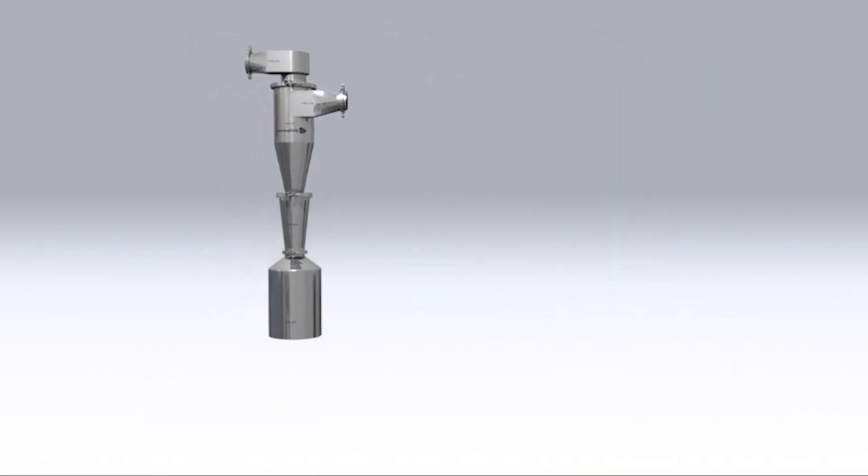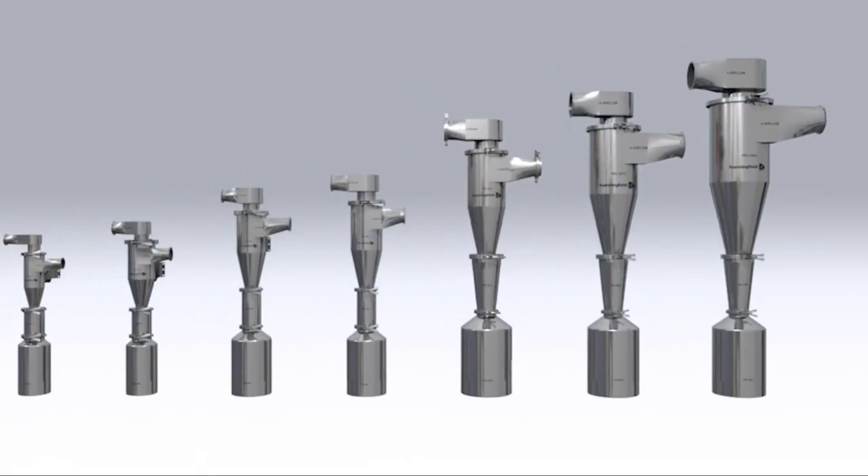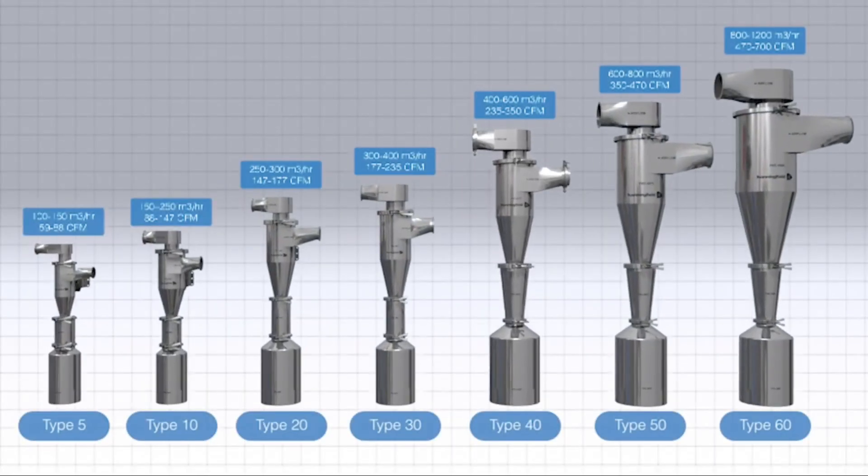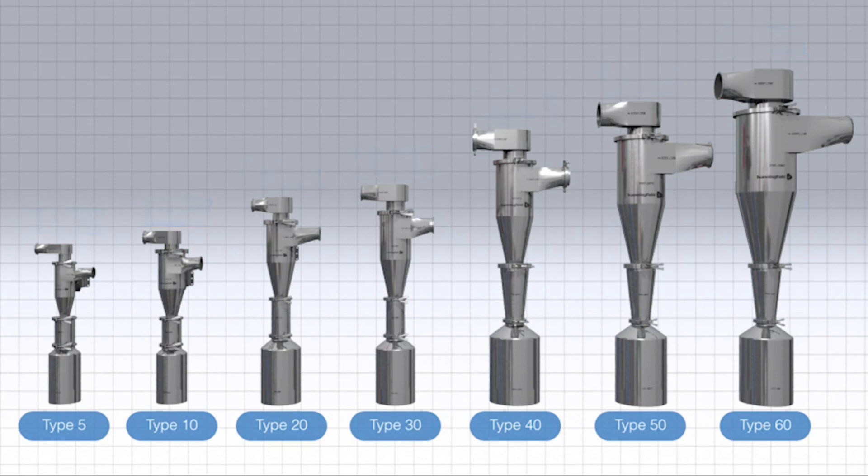The standard range of cyclones are designed for applications in the range of 100 to 1200 cubic meters per hour, or 50 to 700 CFM. Hanningfield can also design custom cyclones for any airflow outside this range.